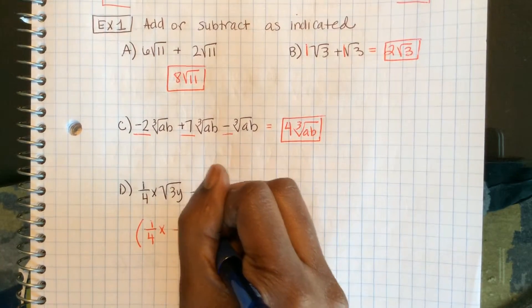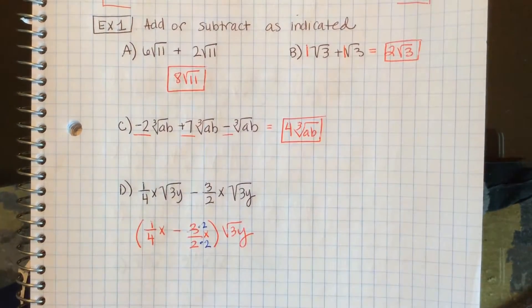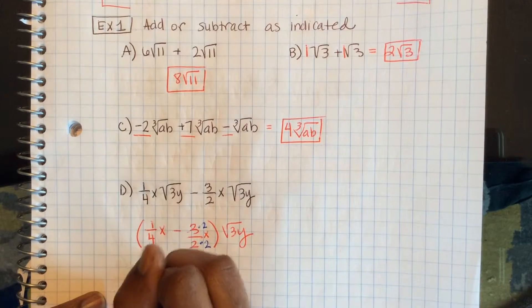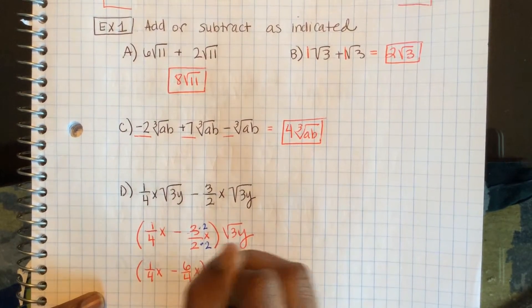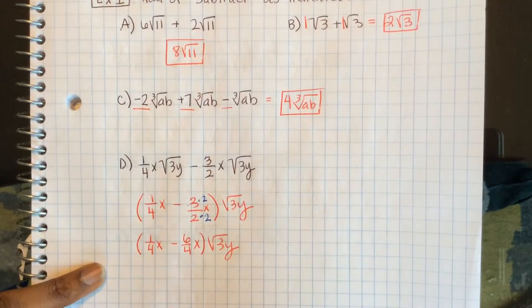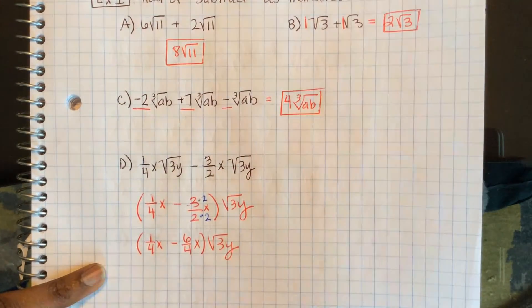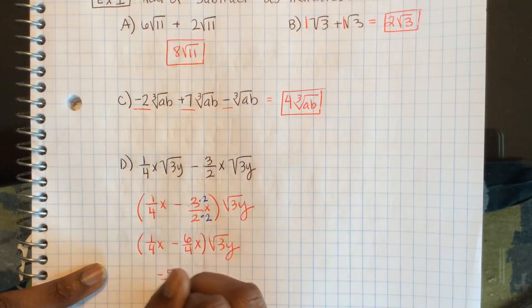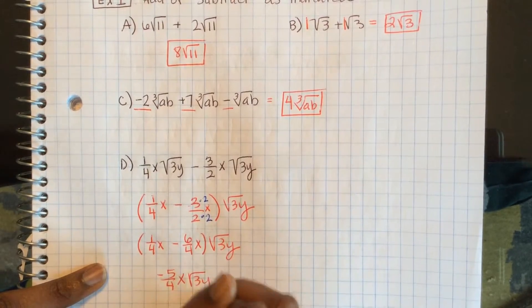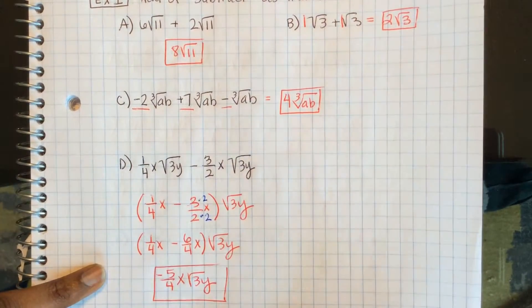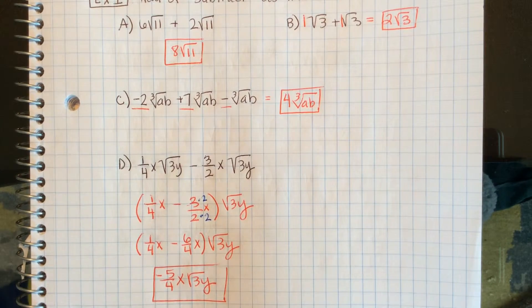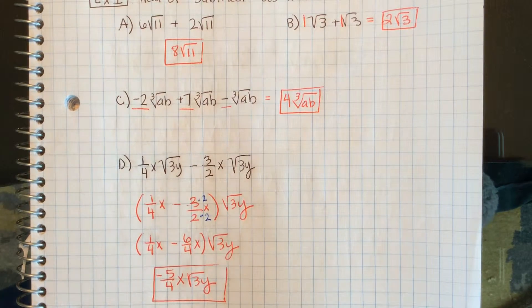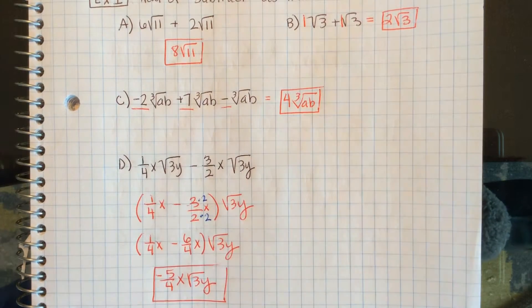I'm going to multiply this one by 2, so this becomes 1/4 x minus 6/4 x square root of 3y. Well, 1/4 minus 6/4 is negative 5/4 x square root of 3y. Remember, when you have like radicals, treat them as your variable and add or subtract their coefficients.